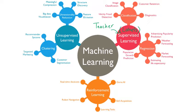The third type of learning is reinforcement learning, which is about learning from your own mistakes. In short, reinforcement learning is about trial and error.